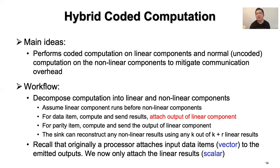StreamLake can incorporate coded computation into linear operations, such that each processor sends only its processing results on a data or parity item to a sink without attaching the data items, thus mitigating the communication overhead. Specifically, StreamLake decomposes the computation into linear and nonlinear components. For data items, the processor computes both linear and nonlinear results, sends the nonlinear results to the sink, and attaches the linear results to the output. For a parity item, it only computes and sends the linear results. In this way, the sink can reconstruct any nonlinear results using any K out of K plus R linear results. Therefore, we only need to attach the linear result, which is generally a scalar, instead of attaching an input item which is generally a vector, thus reducing the communication overhead.